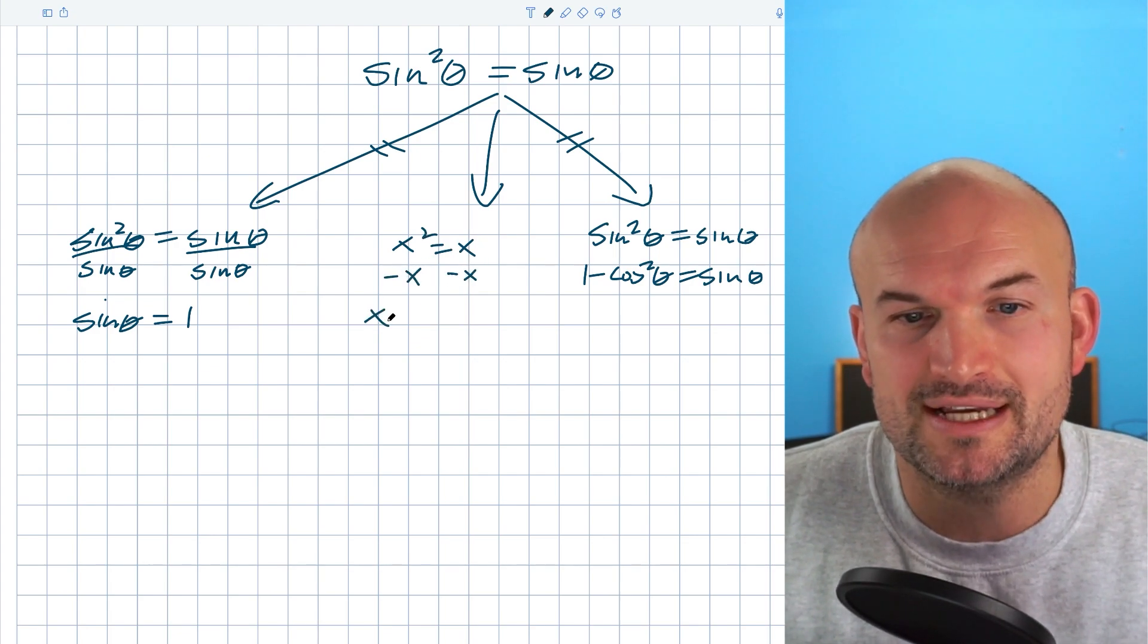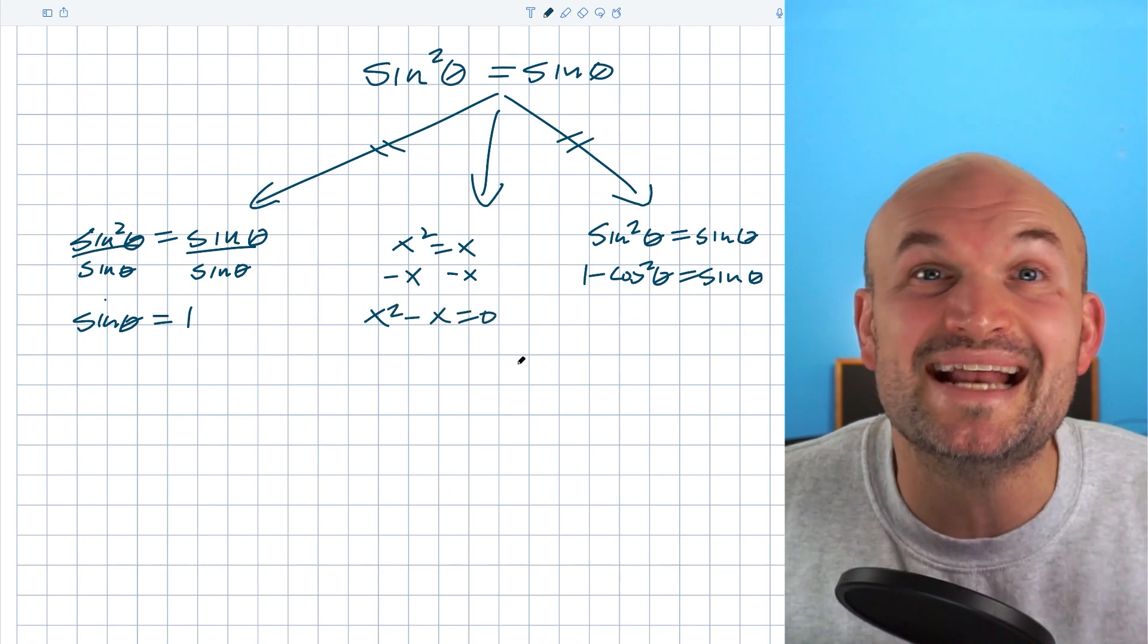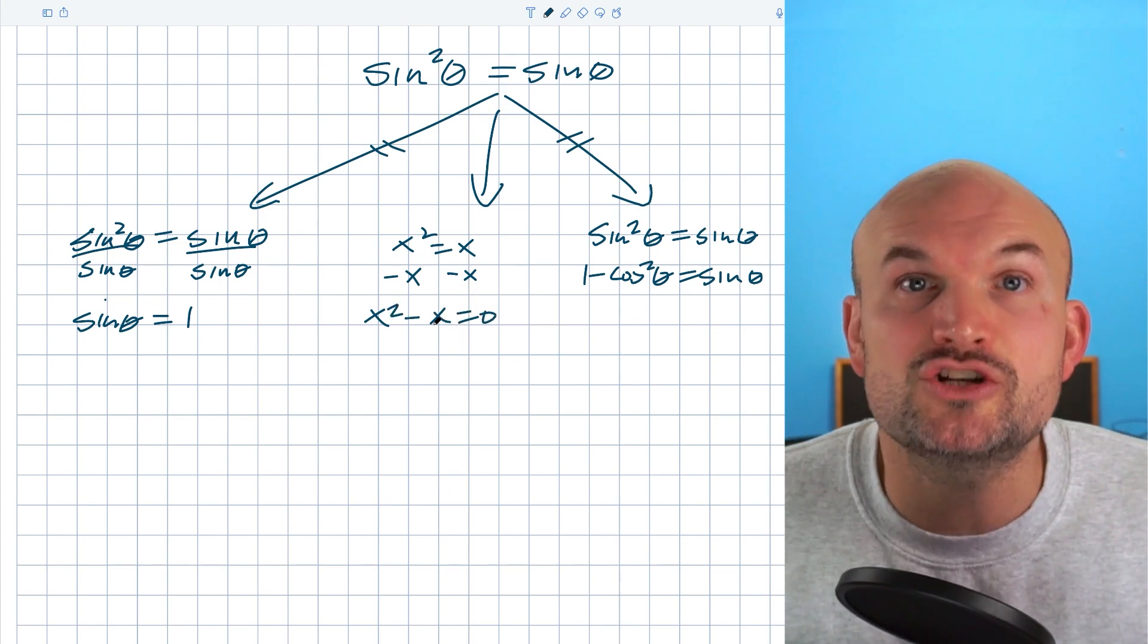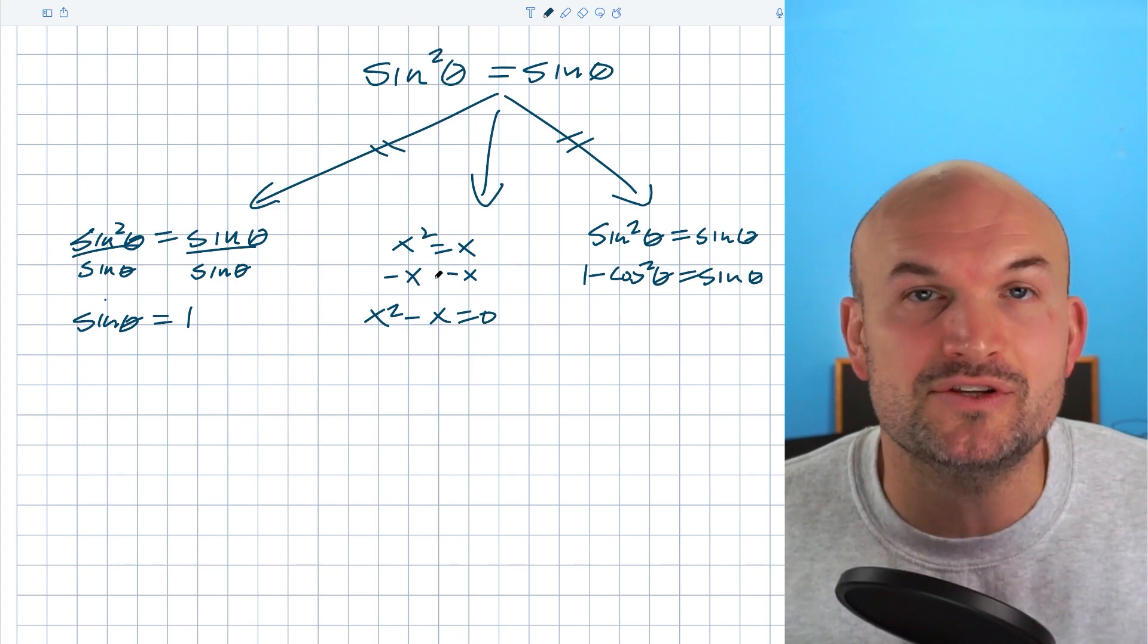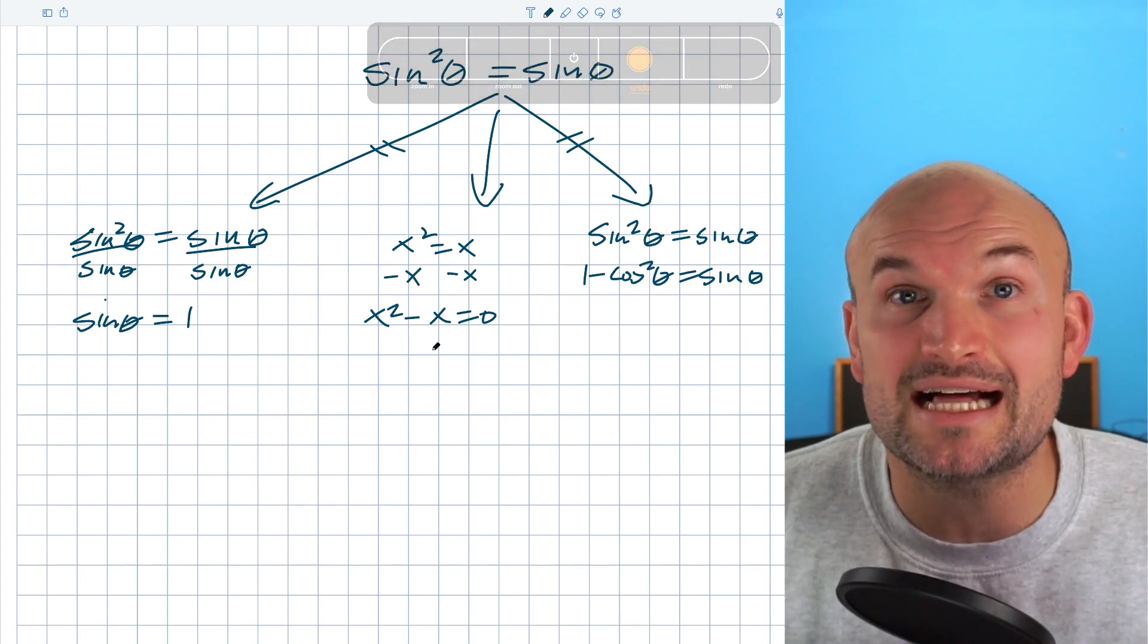So I get x squared minus x equals zero and now I can use factoring to rewrite this as a product, because remember when you have a product you can now use the zero product property. So that's exactly what I'm going to do.